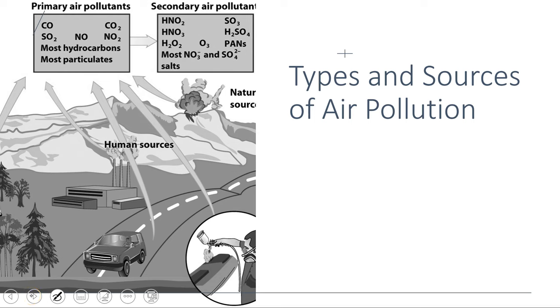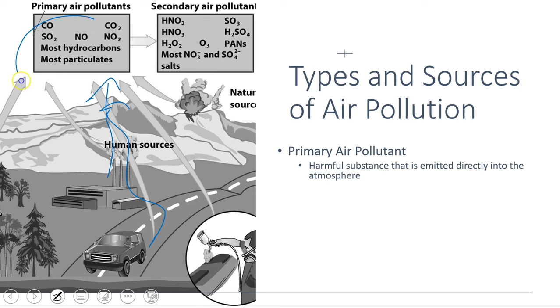We're going to differentiate two terms: primary air pollutants versus secondary. Primary air pollutants are compounds that are emitted directly into the atmosphere by a human process, typically. Anything that comes out, let's say, the exhaust pipe of a vehicle that works its way up into the atmosphere, those are primary pollutants. These are our primary pollutants: carbon oxides, sulfur oxides, nitrogen oxides, hydrocarbons, and particulates.